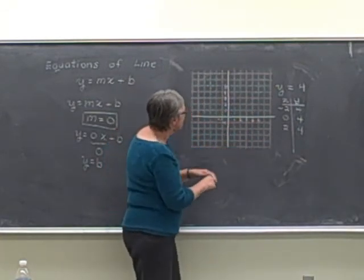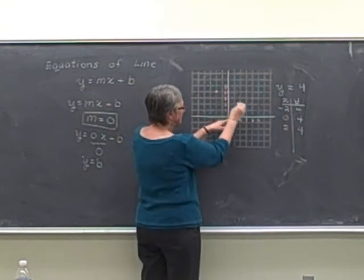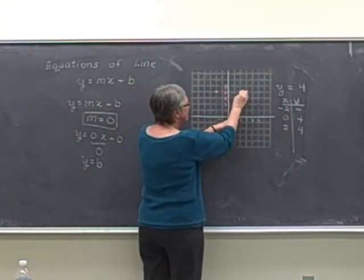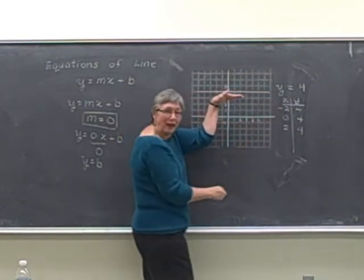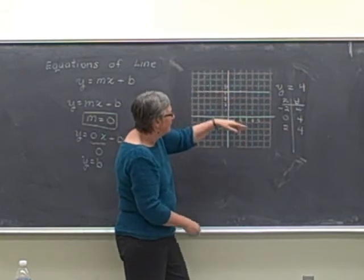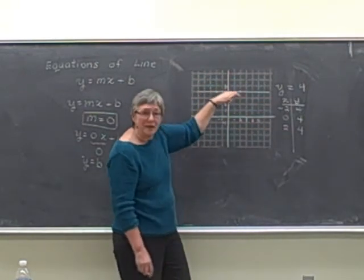When I graph those points, negative 2, 4, 0, 4, 2, 4. You see that we just get a line that's horizontal. It's just flat. It has no slope. No up or down, even though we're going across.